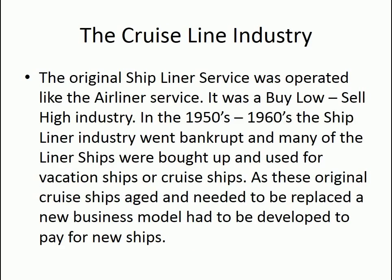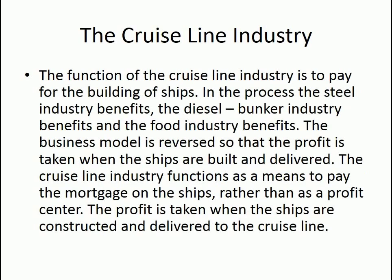The original ocean liner service was operated like the airliner service — it was a buy low, sell high industry. In the 1950s and 1960s, the ship liner industry went bankrupt, and many of the liner ships were bought up and used for vacation or cruise ships. As these original cruise ships aged and needed to be replaced, a new business model had to be developed to pay for new ships. The function of the cruise line industry is to pay for the building of ships — in the process, the steel industry, the diesel or bunker industry, and the food industry all benefit. The business model is reversed so that the profit is taken when the ships are built and delivered. The cruise line industry functions as a means to pay the mortgage on the ships, rather than as a profit center.